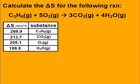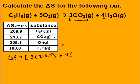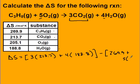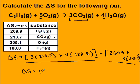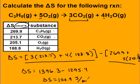Pause the video and calculate delta S for this reaction using the delta S values provided. So first do the products: 3 times CO₂ plus 4 times H₂O, minus all of the reactants — 1 C₃H₈ plus 5 oxygens. Get the whole product value and then all reactant values. The units are going to be the same units in the chart: joules per mole times Kelvin.